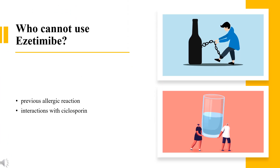The two contraindications to taking ezetimibe are a previous allergic reaction to it, including symptoms of rash, angioedema, and anaphylaxis, and severe liver disease, especially when taken with a statin. Ezetimibe may have significant medication interactions with cyclosporine and with fibrates other than fenofibrate.